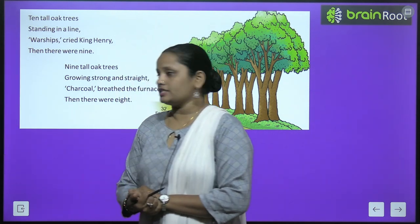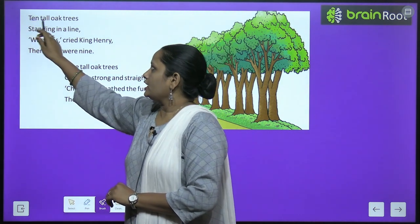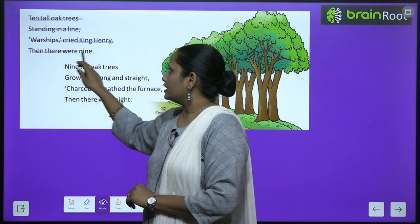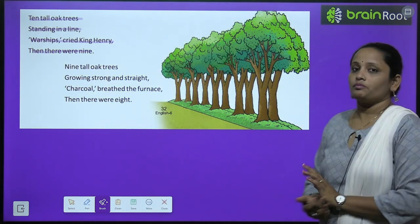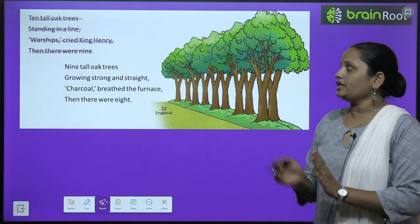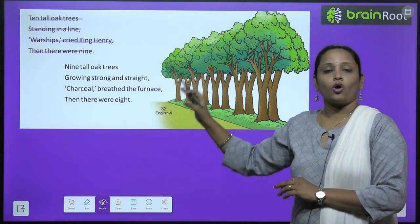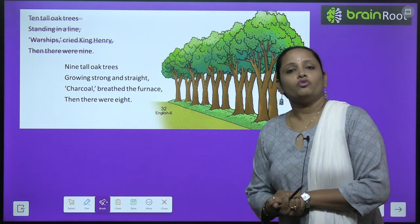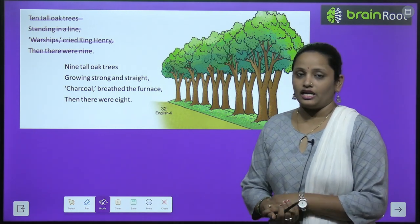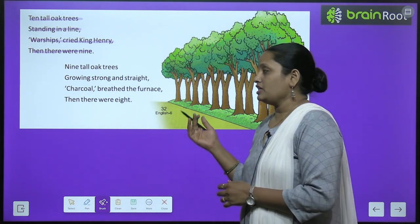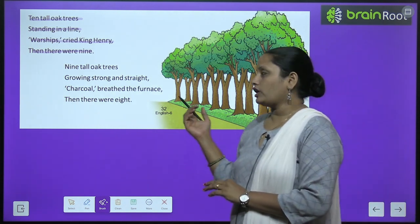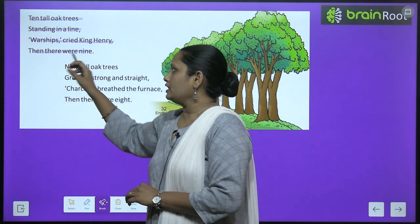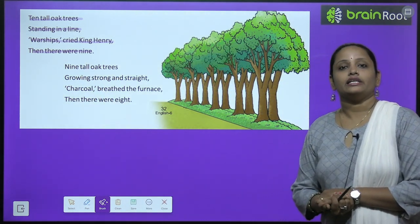Here the first stanza says: '10 tall oak trees standing in a line, worships cried King Henry, then there were nine.' یہاں پہ 10 tall oak trees ایک line میں کھڑے ہیں۔ King Henry نے کہا worships، یعنی انہیں اپنے war کے لئے ships بنانے تھے، تو انہوں نے ایک tree cut کر لیا اپنے لئے ship بنانے کے لئے۔ So then there were nine — نو trees بچے۔